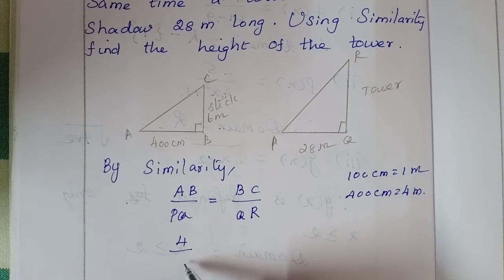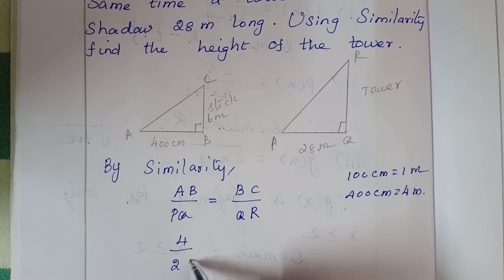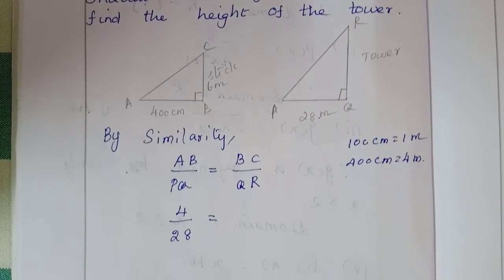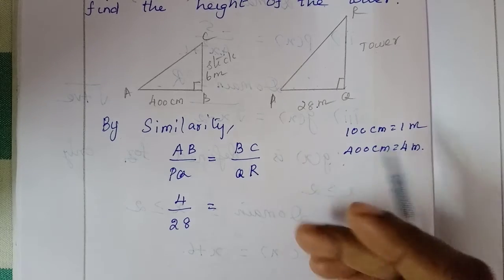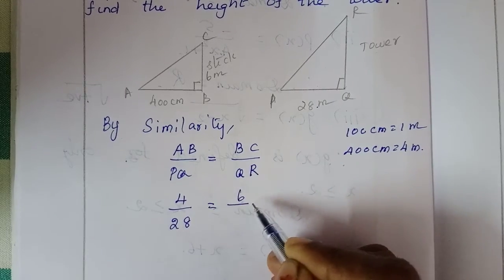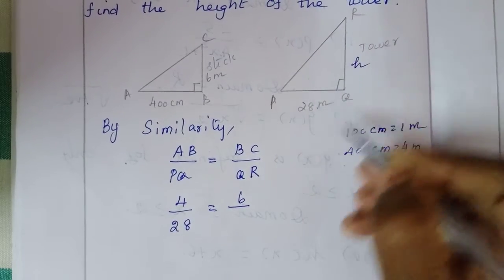4 divided by PQ equals 28. BC value is 6, divided by the tower h.